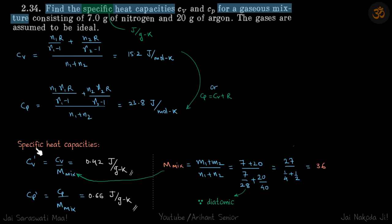Now specific heat capacity. As discussed we will divide by the molecular mass of the mixture. So how do we calculate that? That is total mass upon total number of moles.